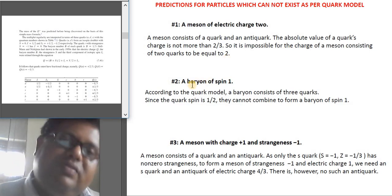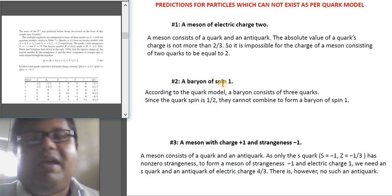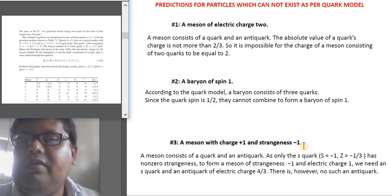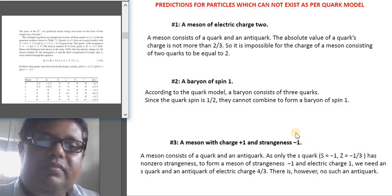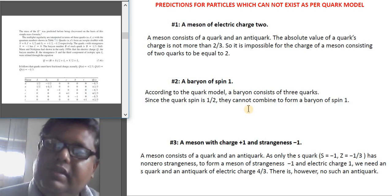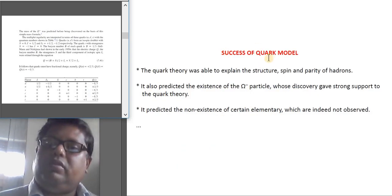Similarly, in a similar fashion, you can explain that a baryon of spin 1 and a meson of charge +1 and strangeness -1 cannot exist. The list doesn't complete here—you see, the success mark of the quark model.